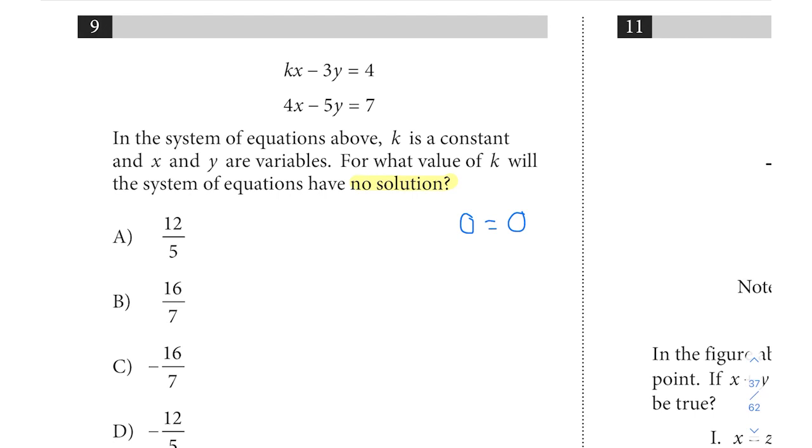For no solution, it's similar. It means your variables are all going to cancel out, except instead of being left with something that's mathematically true, you'll be left with something that's not mathematically true, like zero equals three or negative one equals six, or any two numbers that are not equivalent value. So when we say no solution, that's what we're talking about here.